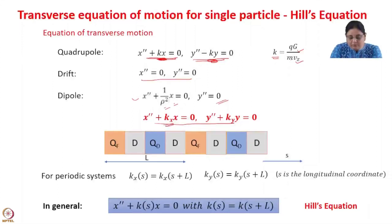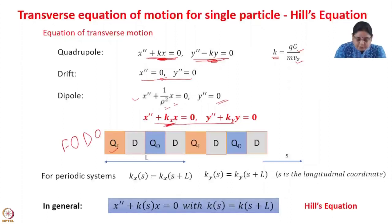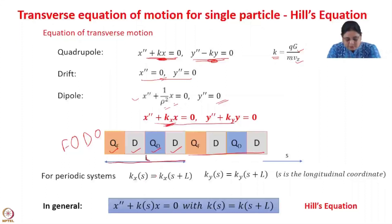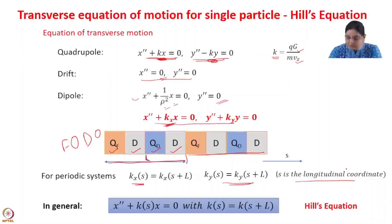Depending on what the element is — whether it is a focusing quadrupole, a defocusing quadrupole, a drift space, or an RF gap — k_x will take different values. Let us consider a FODO lattice: we have a focusing quadrupole, a drift space, a defocusing quadrupole, and a drift space again, followed by the same thing. This is the length of the period, denoted by L. We notice that the period repeats itself after L, so k_x is periodic in L. We can write k_x(s) = k_x(s + L) and similarly for y, where s is the longitudinal coordinate, also denoted z.